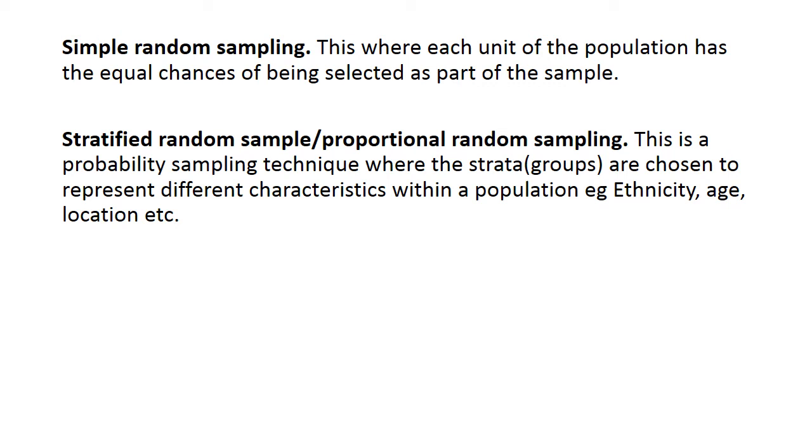So we talk about stratified random sampling or proportional random sampling. This is a probability technique actually where the strata or groups are chosen to represent different characteristics within a population.